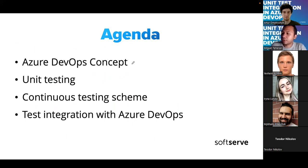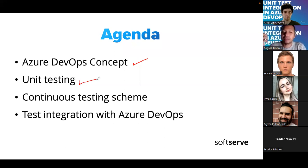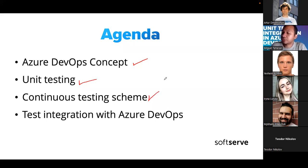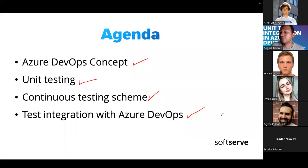First we'll look at how Azure DevOps works and the general concepts. Then we'll talk about unit testing — I have a demo using .NET Core and C#, but the concept is exactly the same for all programming languages. After the demo we'll understand unit testing, then see how to create a continuous testing schema using Azure DevOps, and finally review the Test Plans module and its integration.